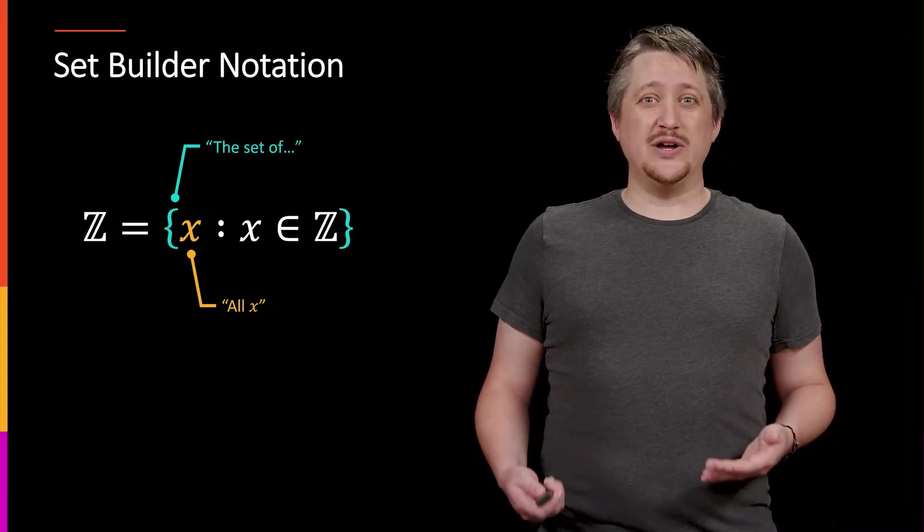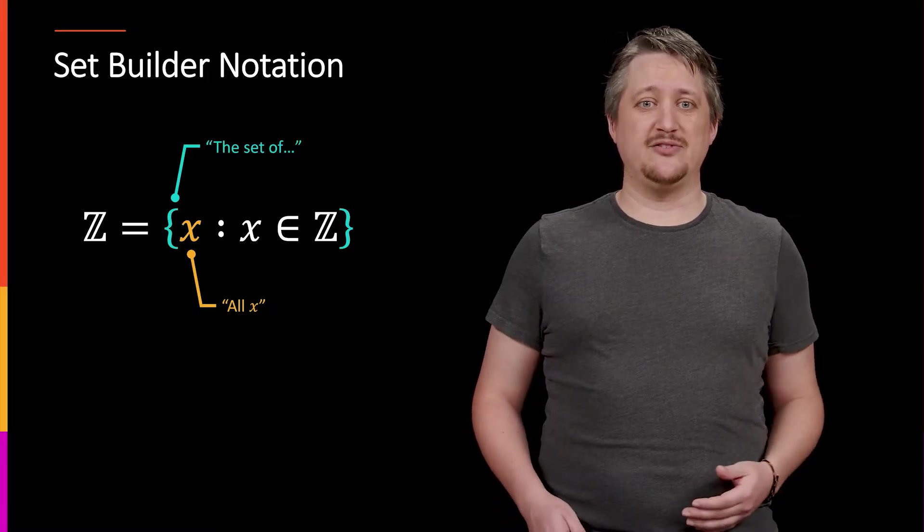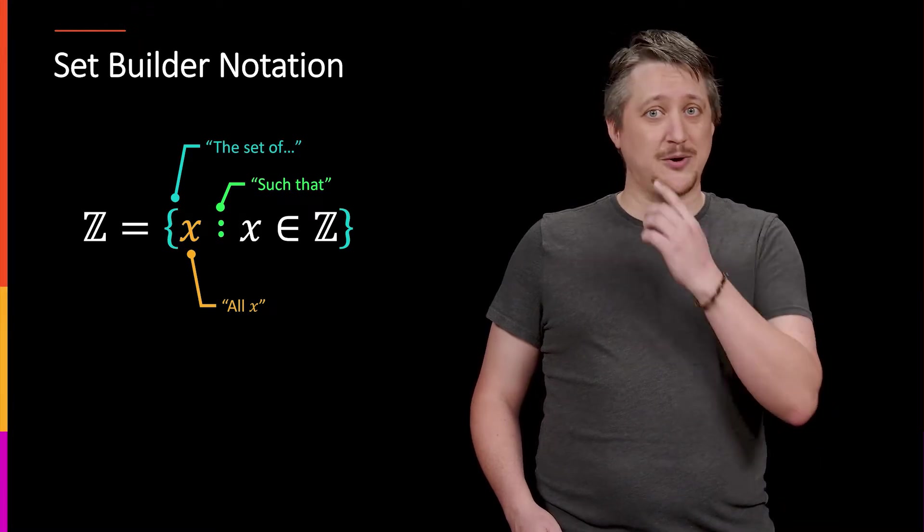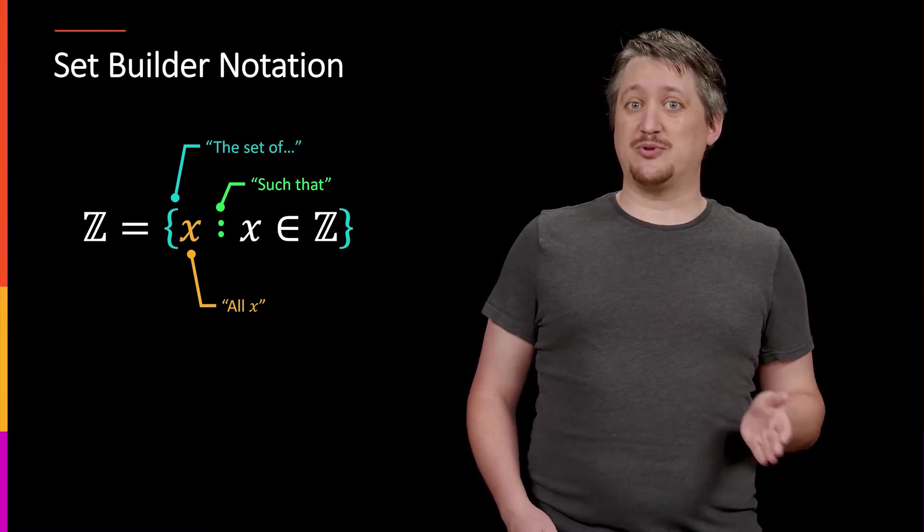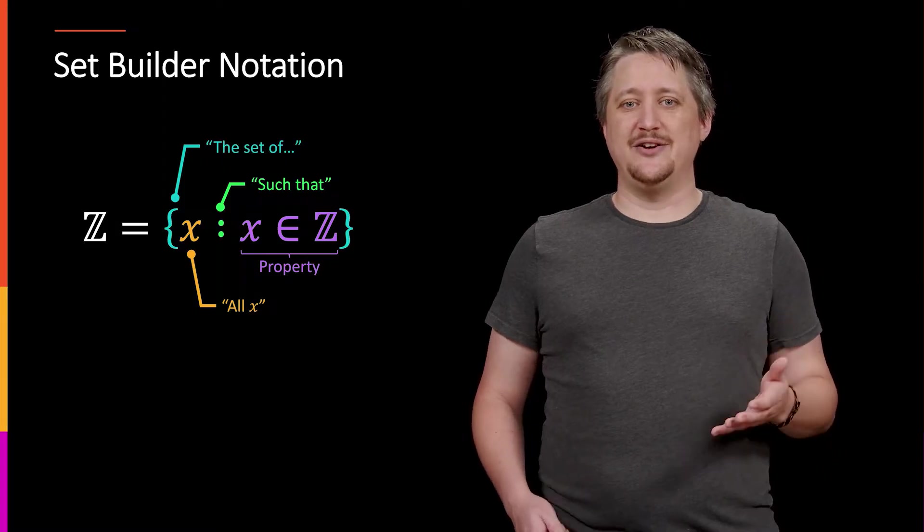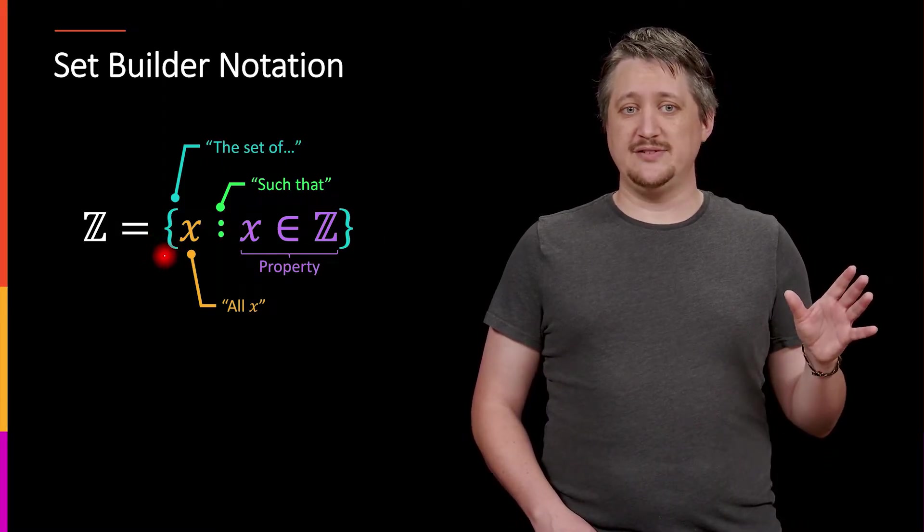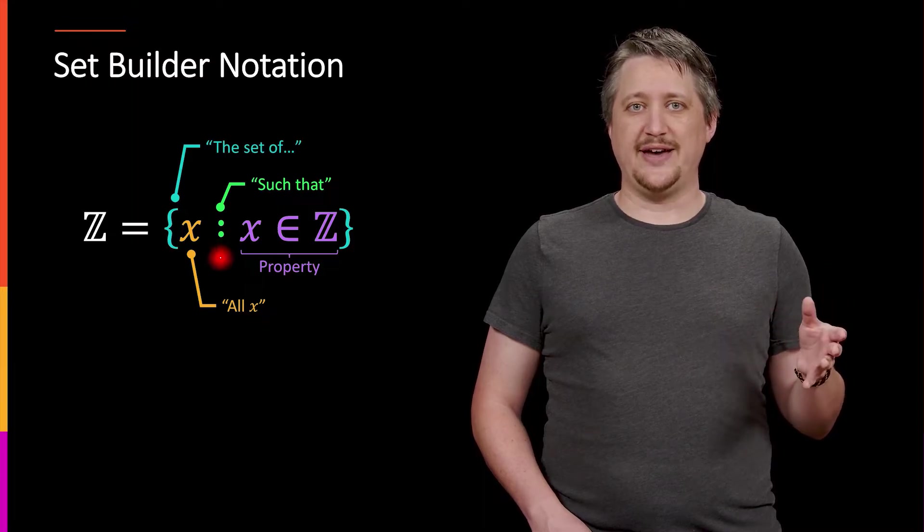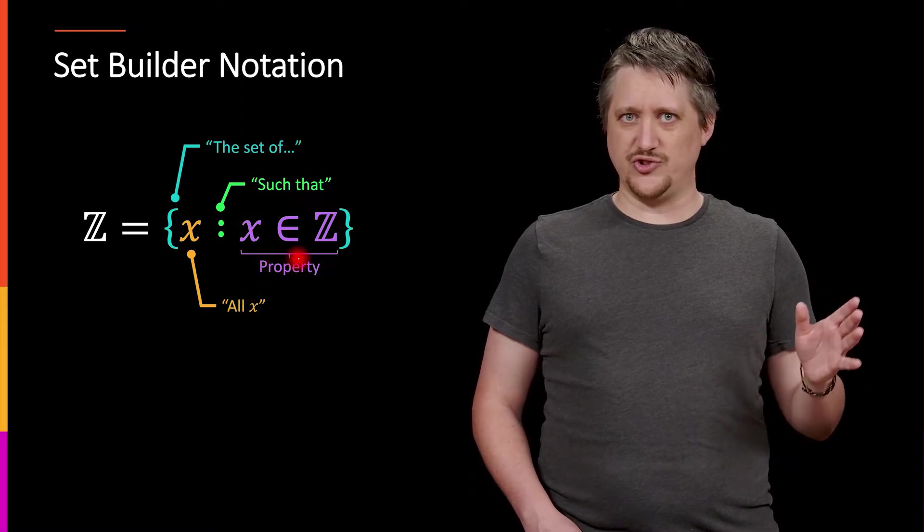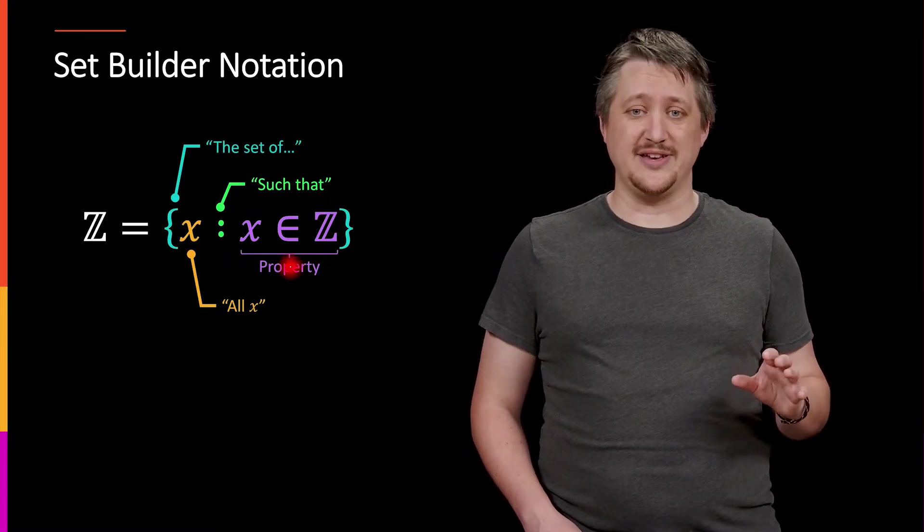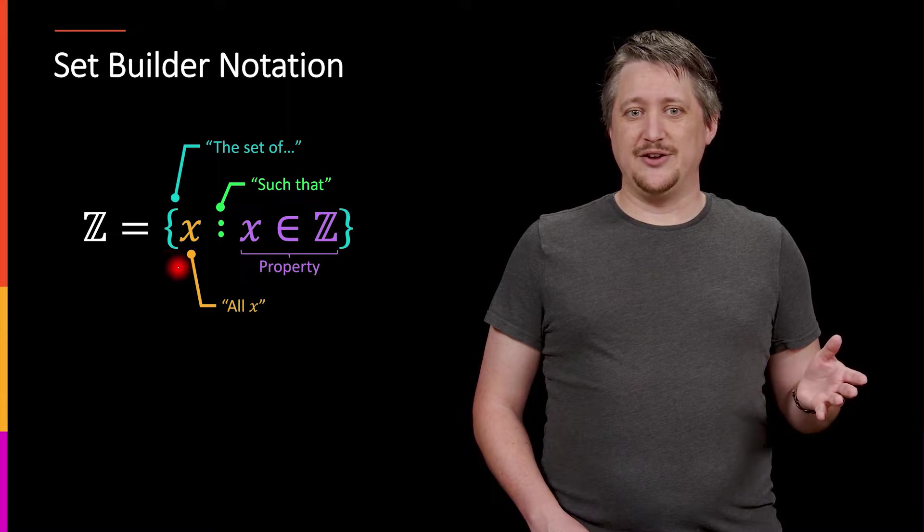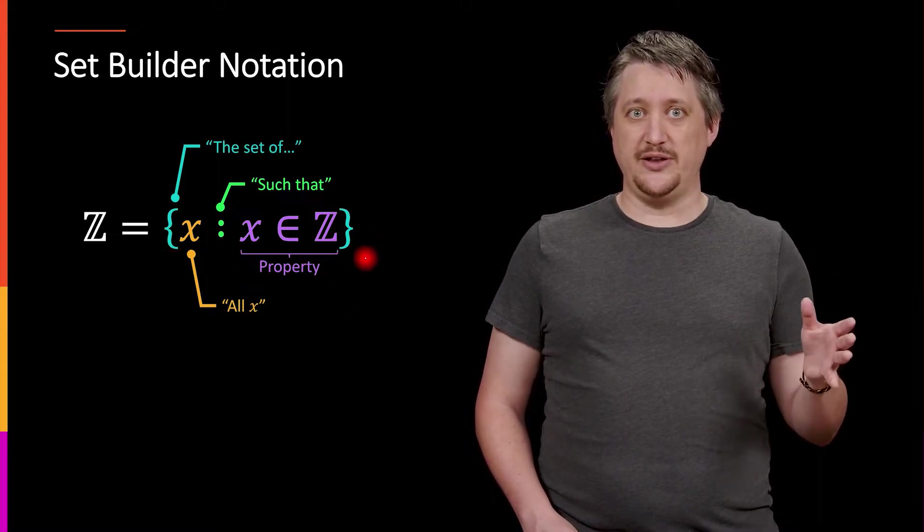And then we need to describe what those x's have to have in order to be in this set. So the set of all x such that, that's what this colon tells us. And the colon is saying the stuff that follows is going to be the properties we need. And then whatever follows that are the properties that you need. So it's the set of, that first bracket piece, the set of all x such that, and then whatever this thing requires. And the close brace tells us that that set is done.